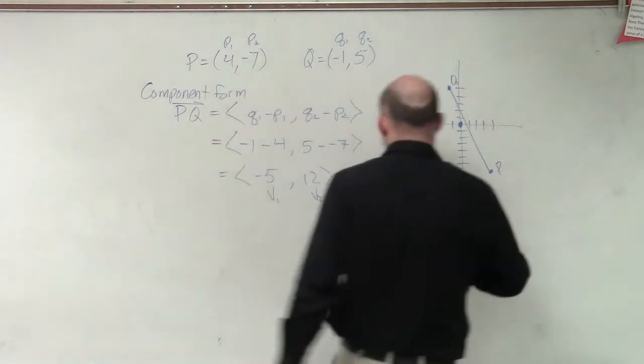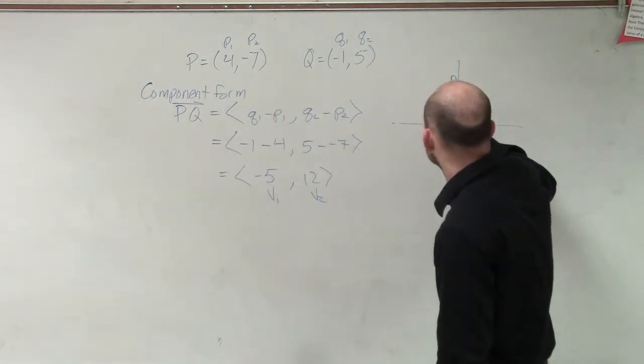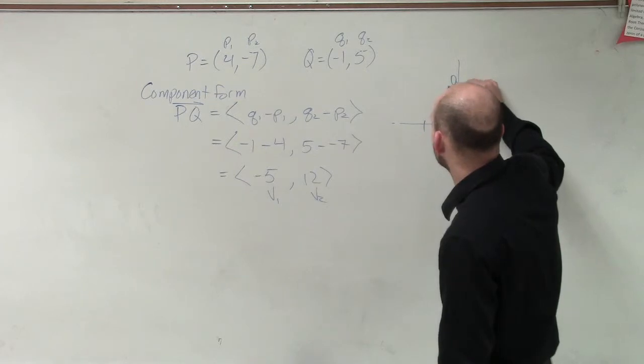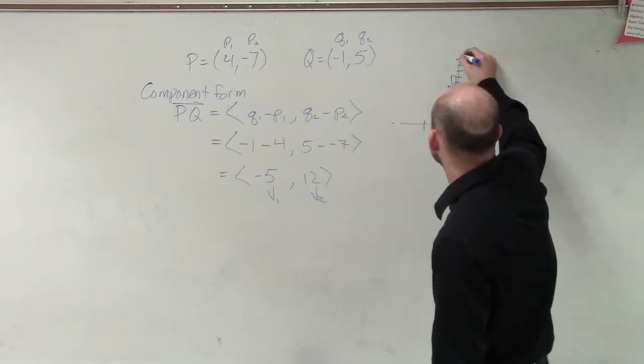So therefore, you could go over negative 5, up 12.